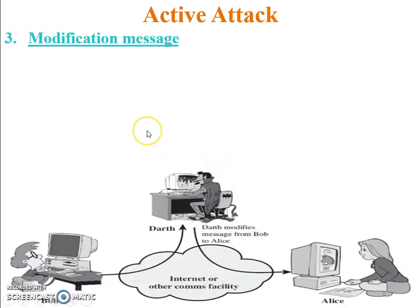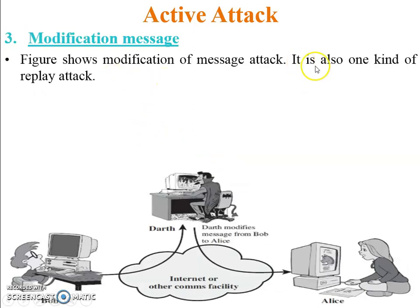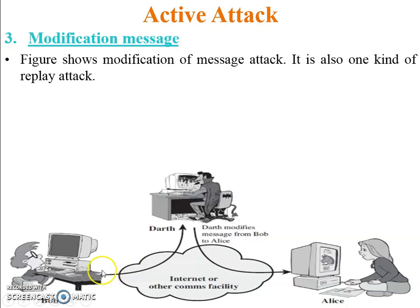Third one: modification of message. The figure shows modification of message. The message is modified by the attacker and sent to the receiver. In this figure, Bob is the sender. The original message is captured by Darth and does not reach Alice. Darth changes the message and sends the modified version to Alice. For example, Bob sends 'Today's party time is 10 o'clock,' Darth captures the message and changes it to '11 o'clock' and sends it to Alice.